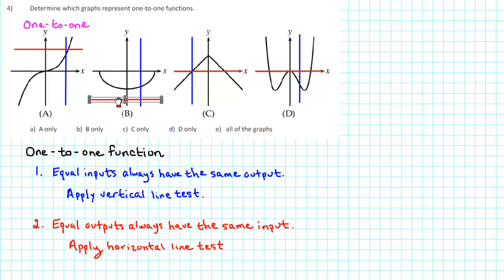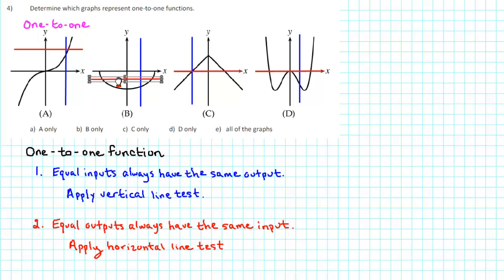What about graph B? When Y is negative, a horizontal line might not intersect the graph at all, or it might intersect the graph at one point. But we see that it's also possible for a horizontal line to intersect the graph at more than one point. This particular horizontal line intersects the graph at two points — these two points have equal outputs but different inputs. Therefore, it is not the case that equal outputs always have the same input. Graph B does not pass the horizontal line test, and therefore it is not a one-to-one function.